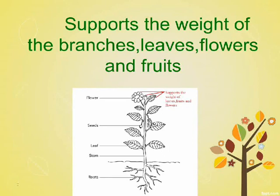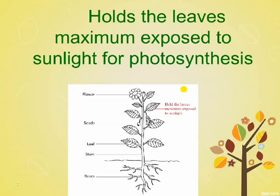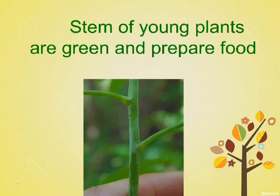The stem supports the weight of the branches, leaves, flowers, and fruits. It also holds the leaves maximally exposed to sunlight for photosynthesis. The stems of young plants are green and prepare food.